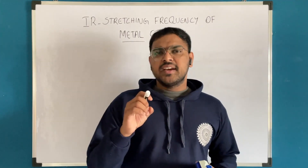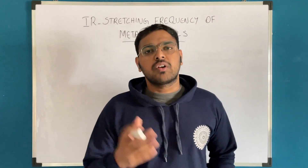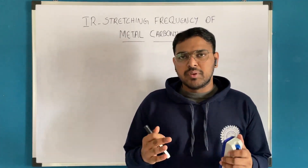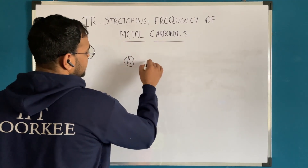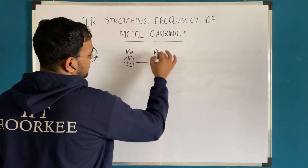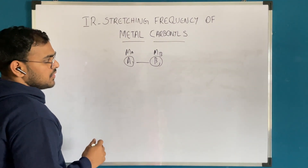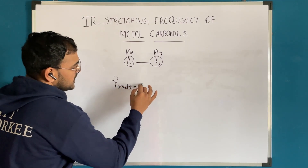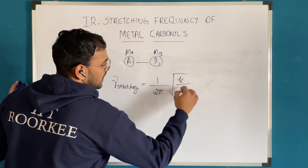Friends, all of you might have learned about IR spectroscopy. IR spectroscopy is a promising spectroscopic technique to determine the functional groups in an organic compound, also the natural bonds in it. In IR spectroscopy you might have learned about a formula for finding the stretching frequency of any bond. Suppose if I have a bond between A and B having molar masses M_A and M_B, we can write the stretching frequency as: ν_stretching = (1/2π)√(k/μ).